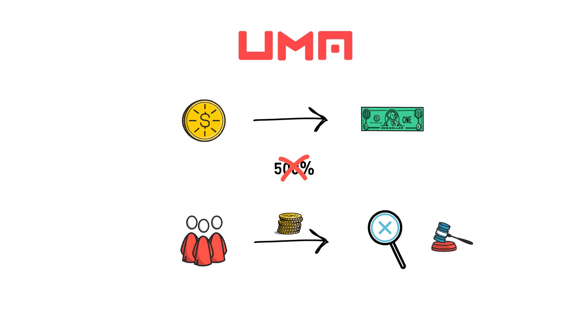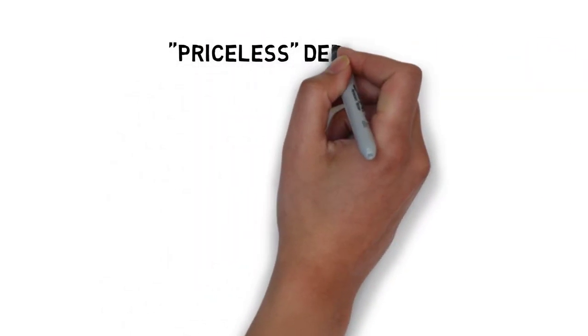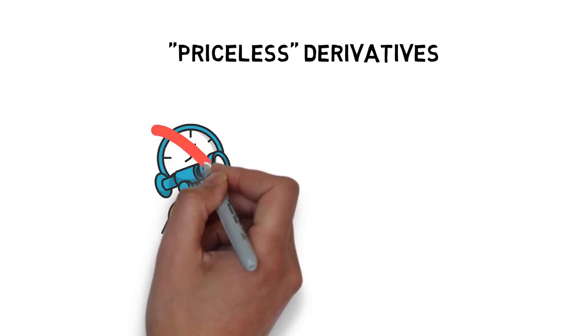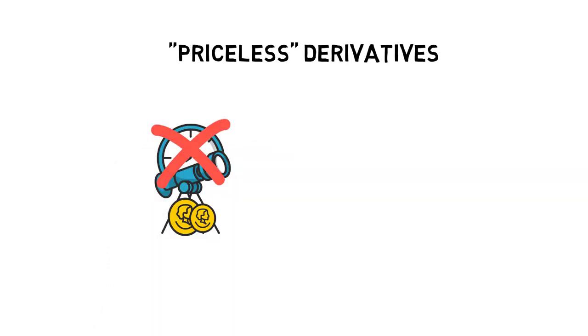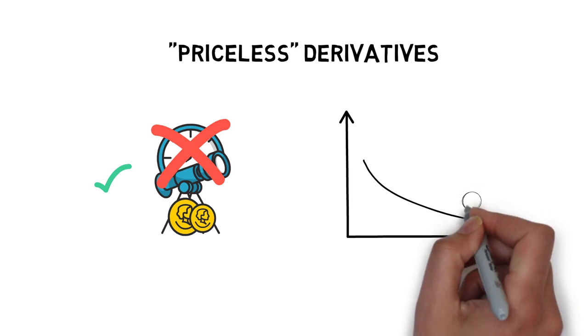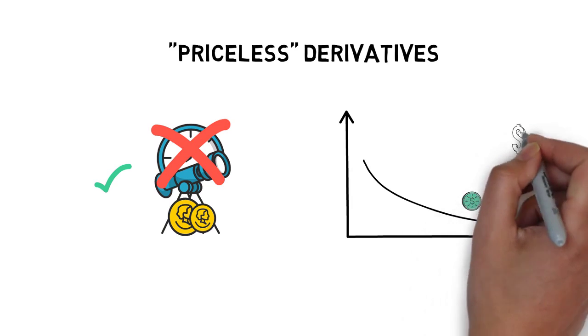UMA's model allows for creating priceless derivatives. This is because the model doesn't rely on price oracles, at least not in the optimistic scenario. This in turn allows for adding a very long tail of synthetic assets.